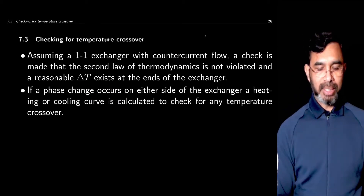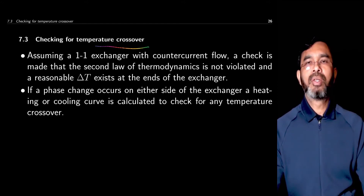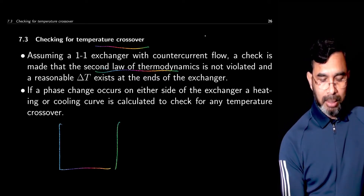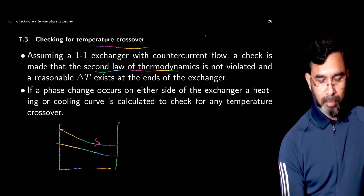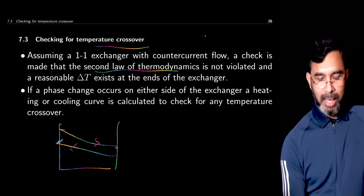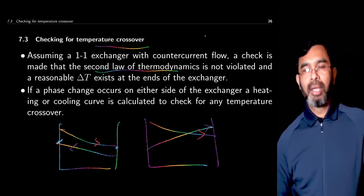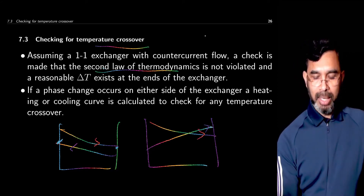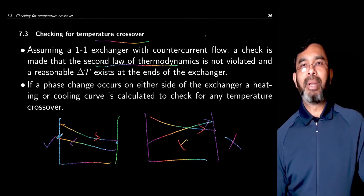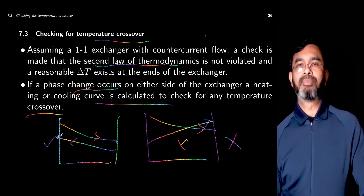When you have done the energy balance, you need to check whether there is a temperature crossover. This might happen with parallel flow or counter-current flow. You must always maintain that the second law of thermodynamics is not violated. For a counter-current heat exchanger, it is possible for the exit temperature of the cold stream to be higher than the exit temperature of the hot stream. However, that temperature condition is not possible for parallel flow. So you need to make sure this scenario is not happening with the temperature range under consideration, especially when a phase change is occurring.